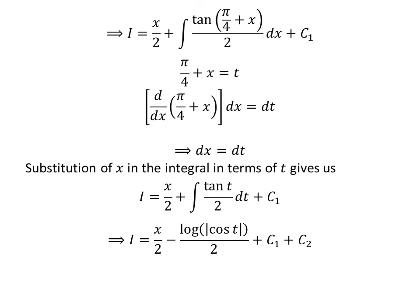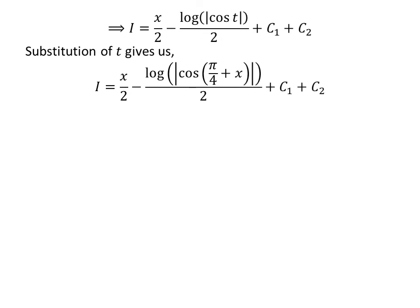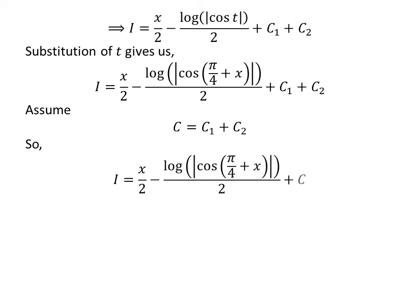Capital C2 is the arbitrary constant of the indefinite integral — never forget to add this constant. Since we assumed t is equal to pi upon 4 plus x, substituting back gives i is equal to half of x minus natural log of absolute value of cosine of pi upon 4 plus x upon 2, plus capital C1 plus capital C2. Letting capital C equal capital C1 plus capital C2, we get i is equal to half of x minus natural log of absolute value of cosine of pi upon 4 plus x upon 2, plus capital C.